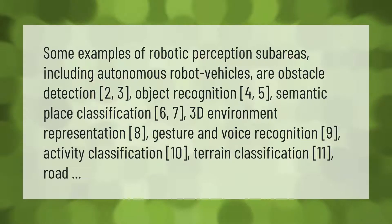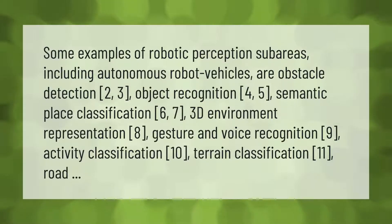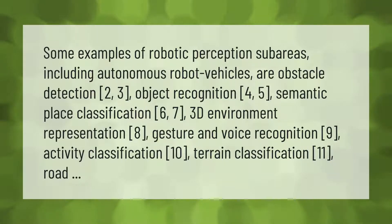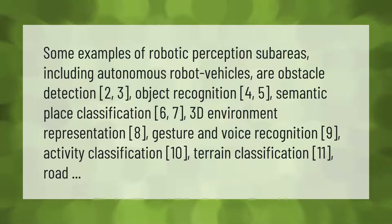Some examples of robotic perception sub-areas, including autonomous robot vehicles, are: obstacle detection, object recognition, semantic place classification, 3D environment representation, gesture and voice recognition, activity classification, terrain classification, and road detection.